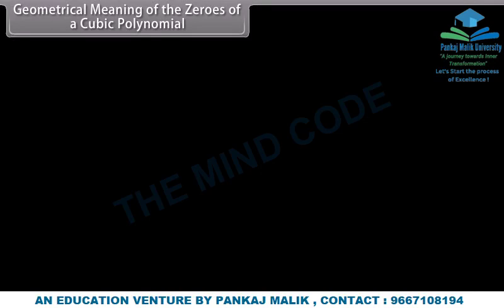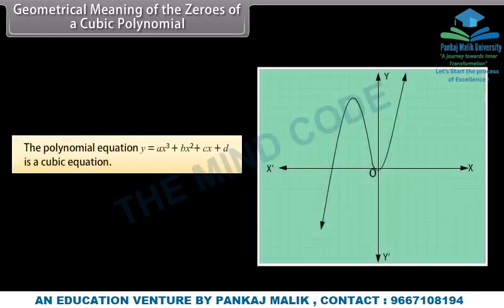For the geometrical meaning of the zeros of a cubic polynomial: the polynomial equation y equals ax cubed plus bx squared plus cx plus d is a cubic equation. This is the shape of the graph for a cubic polynomial.